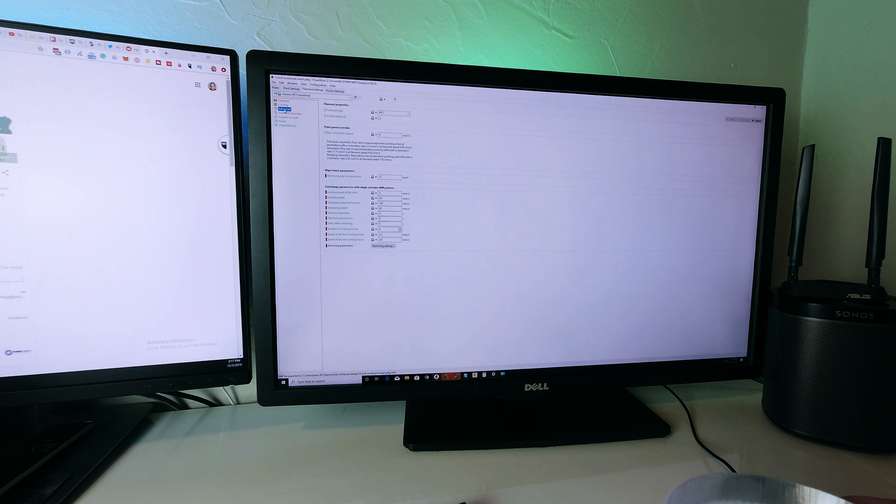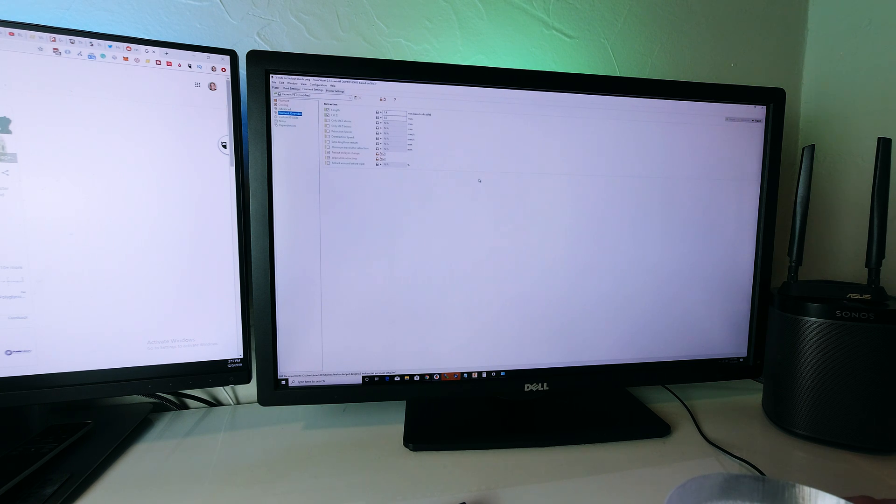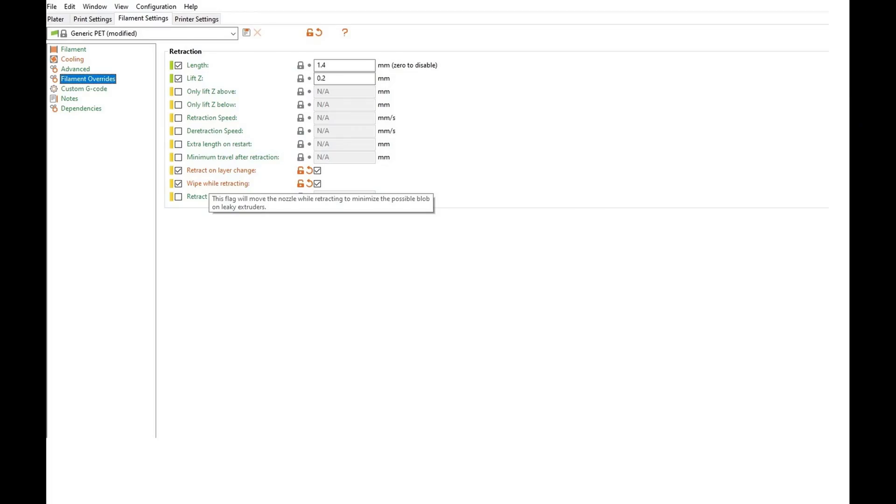For the filament overrides, honestly I think this probably had the biggest impact on how this whole thing works. I did retract on layer change and wipe while retracting. With PETG what typically happens when you're printing is it goes back and forth across all the lines continuously extruding. What ends up happening is you get globs that attract to the brass nozzle, it gets stuck there, and then every few layers or every once in a while you get this big glob of PETG that sticks to the middle of a layer.